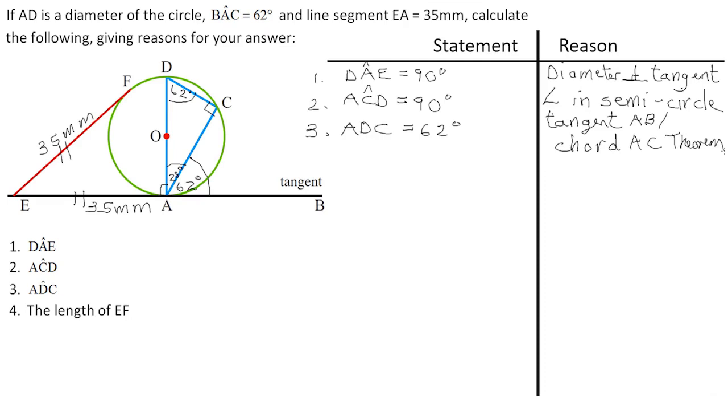And then number four. We've already calculated the length of EF. EF is equal to 35 millimeter. And what is the reason there? It's very important to take note. Tangents from a common point. And to make life even easier, we can even illustrate which common point, common point E.